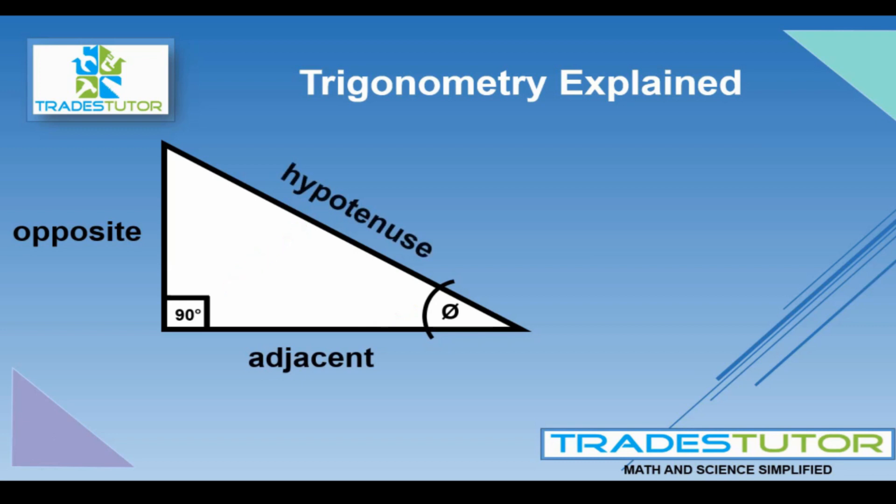And then there's going to be a definite relationship between the three sides, depending on the three different angles. And how we define that relationship, or how that works, is what we call trigonometry. Or you may have heard this, SOH CAH TOA. And each of the three letters represents one function.